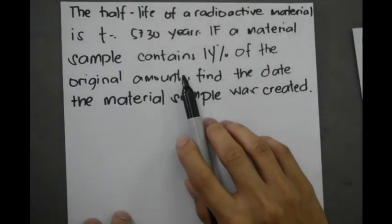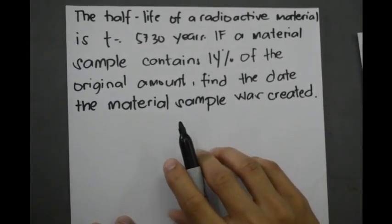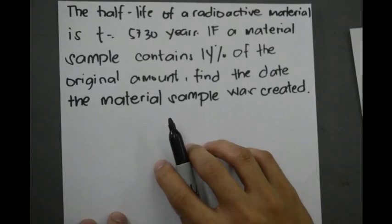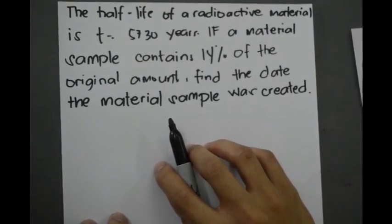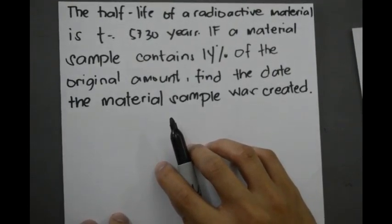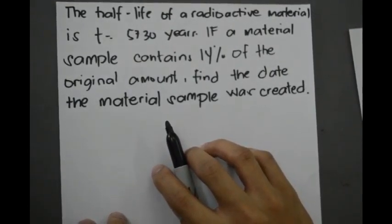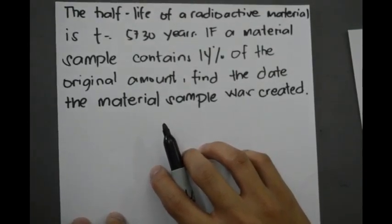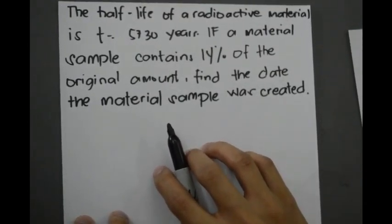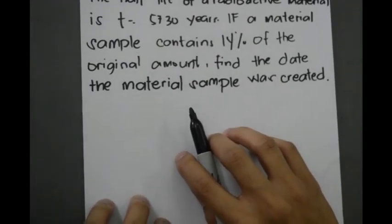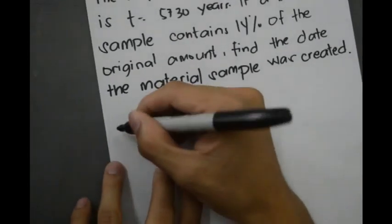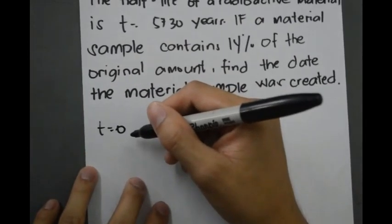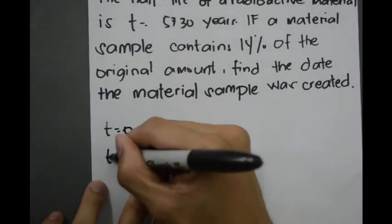The half-life of a radioactive material is t equals 5,730 years. If a material sample contains 14% of the original amount, find the date the material sample was created. Let us fix the time of the original amount at t equals 0 and denote the present time by t sub 1.